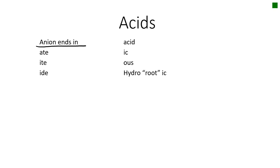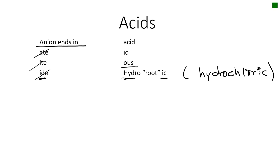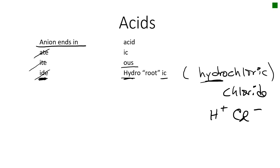Now for acids: if our anion ends in -ate, our acid ends in -ic. If our anion ends in -ite, we take off the -ite and add -ous. If the anion ends in -ide, we take off the -ide, put hydro in front, and add -ic. So anytime you see hydro in an acid name, like hydrochloric acid, your anion ends in -ide and there will be no oxygens in that acid.